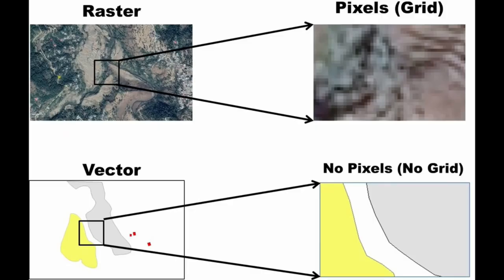Here are two examples of raster and vector data structure. In the topmost you will find the raster data structure with pixels — when you zoom in this specific area you can see the pixels. With the vector, when you zoom in a particular area you will not find any pixels or a grid as in raster images. The basic difference between raster and vector is the pixel, or you can say the grid.